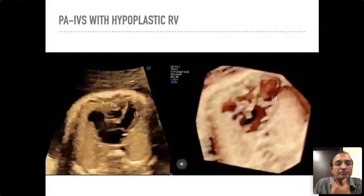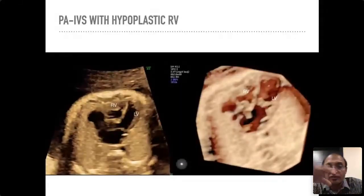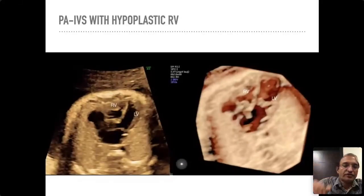So these are the three ways to differentiate Ebstein's from tricuspid valve dysplasia: the level of insertion of the tricuspid valve, the origin of the TR jet on color Doppler, and the size of the right ventricular cavity. There is one more method which we haven't discussed for the sake of simplicity.